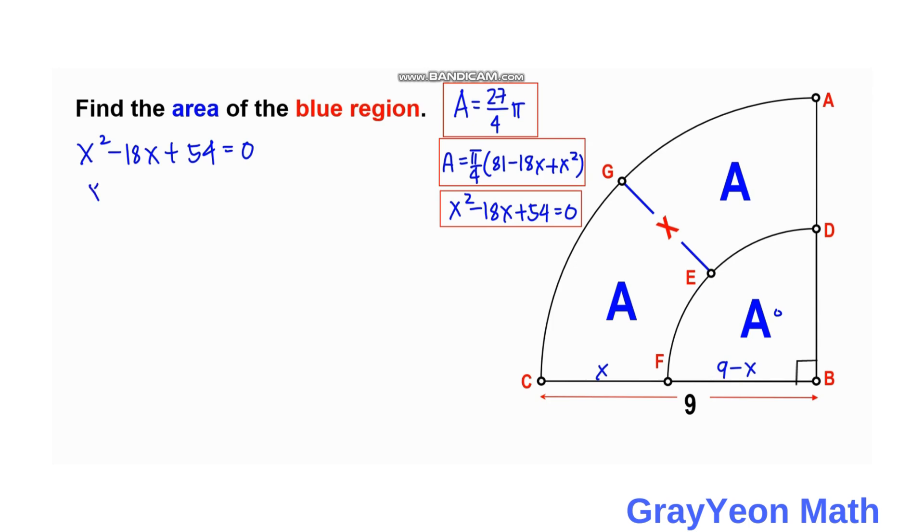So we have to write X squared, then minus 18X. Then we get half of 18 and square it. So we have 9, half of it is 9, so we need to square that. So this becomes 81, plus 81. And we need to put this 54 to the right-hand side, so it becomes negative 54 and add 81 to make it balanced.